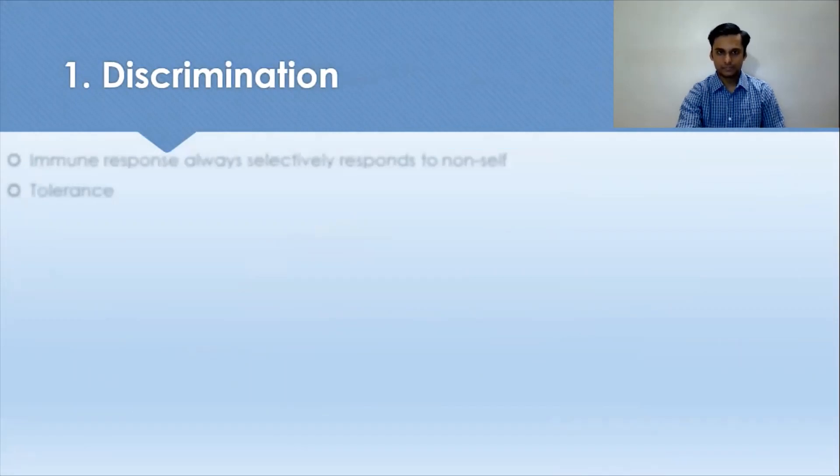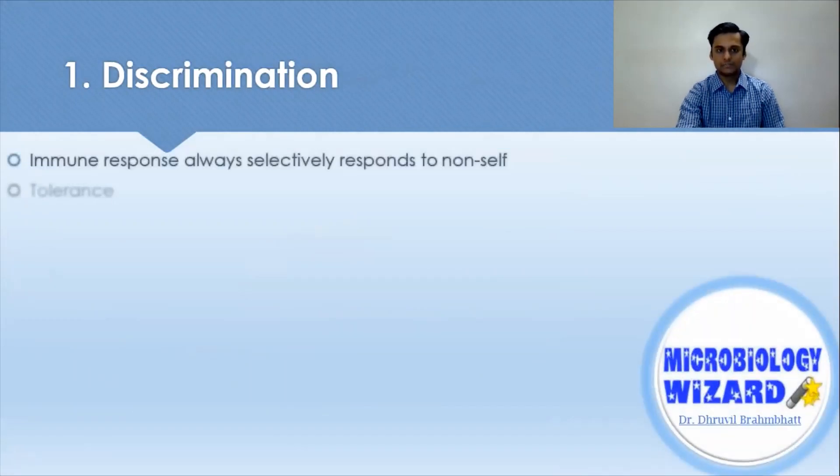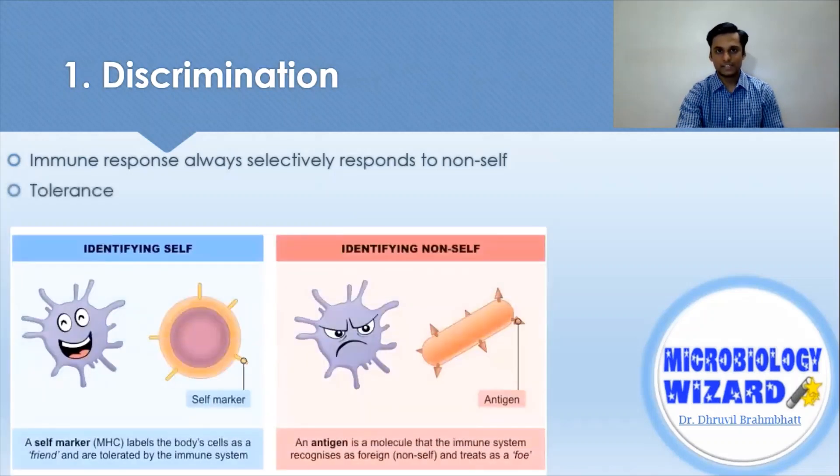First, discrimination. The adaptive or specific immune response always selectively responds to non-self and produces specific responses against the stimulus. The unresponsiveness towards the self cells is known as tolerance, whereas identification of non-self are responded to and neutralized.